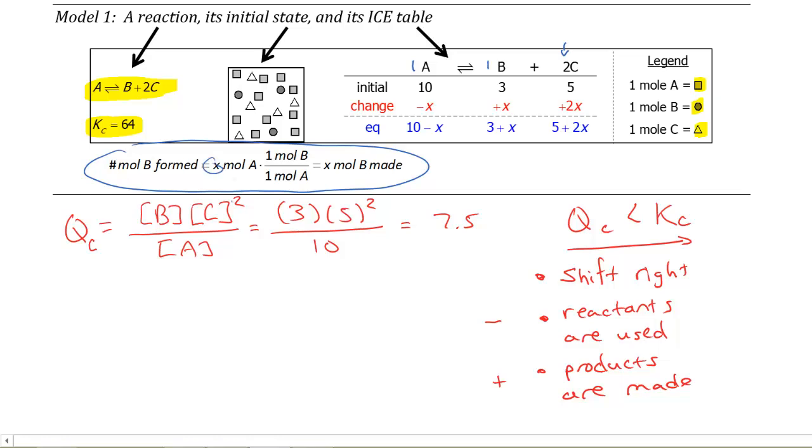For every x moles of A, the stoichiometry says 1 mole of A is going to make for me 1 mole of B. So I'm going to make x moles of B because the moles of A and the moles of A are going to cancel out. Now we see how we fill this in. It's always going to be a positive or a minus, and it's going to be the stoichiometric coefficient: 1, 1, 2, minus 1x, plus 1x, plus 2x. We get the minus sign and the positive sign by looking at Q and seeing how it compares to K.